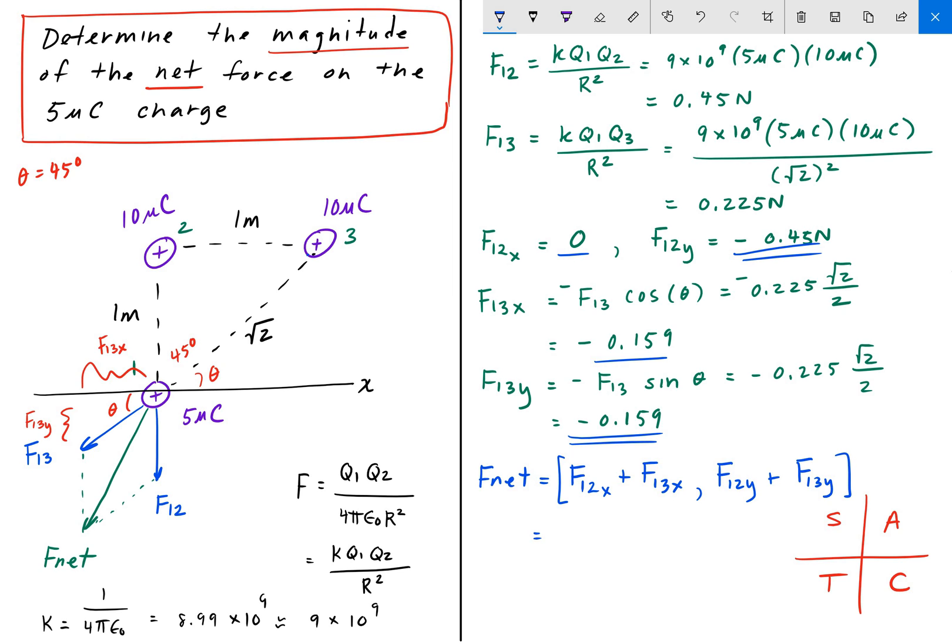And when we add those up respectively, we get F12x is 0 plus F13x is negative 0.159. And now we add up the y components here. So that's negative 0.159 plus negative 0.45. Which is going to give us a larger negative. And that gives us negative 0.609.